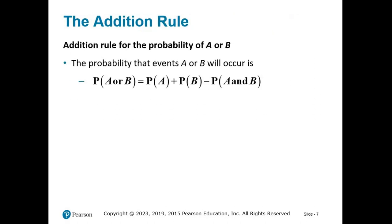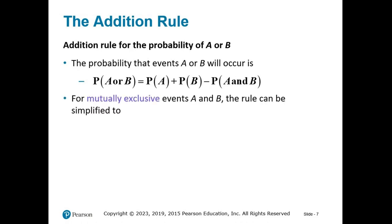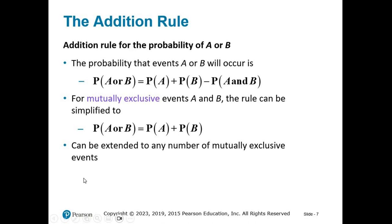Here's where this is all leading — it's called the addition rule. It says that the probability that events A or B will occur is to sum their probabilities together and then subtract their overlap. However, if we know that events A and B are mutually exclusive, this rule simplifies to just the sum of their probabilities, because if they're mutually exclusive there won't be any overlap — the probability of A and B happening together is 0. Just like the multiplication rule, this rule can be extended to any number of mutually exclusive events.